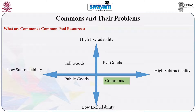Resources are classified based on whether exclusion is possible or difficult — whether resources are highly excludable or exclusion is difficult — and whether resources are subtractable or not. Based on these two perspectives, we may identify four types of resources. Commons are those specific resources which may be characterized by low excludability and high subtractability.